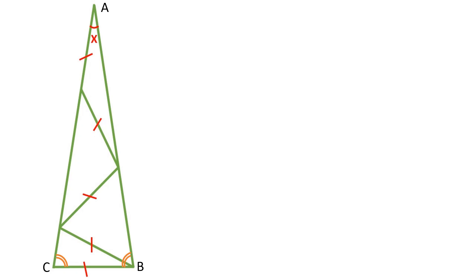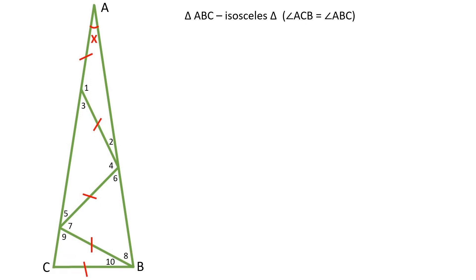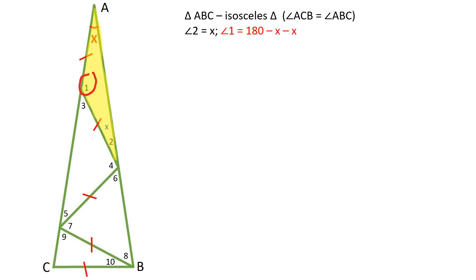Let's solve this problem. Triangle ABC is an isosceles triangle because angle ACB is equal to angle ABC. Let's assign a number to each angle. Angle 2 is equal to X because the yellow triangle is an isosceles triangle. Angle 1 is equal to 180 minus 2X because the sum of the interior angles of a triangle is equal to 180 degrees.